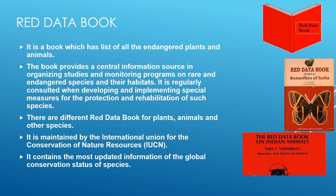Based on the information in the Red Data Book, different steps and measures can be taken to protect and rehabilitate endangered species. If suitable environmental conditions exist elsewhere, species can be transferred to those locations. If a development project is essential for humans, the species found in that area must be relocated by studying their habitat and food habits carefully, so they do not become extinct.